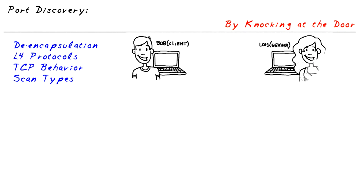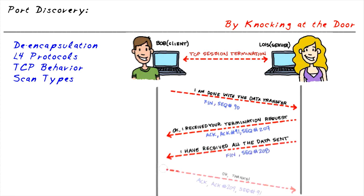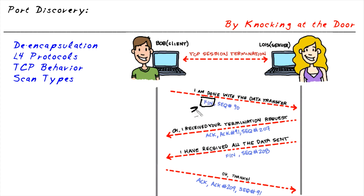Very similar to saying goodbye at a party appropriately, TCP also completes its conversations in a certain manner. The typical TCP termination works like this: Bob would send a TCP segment with the FIN flag set in the TCP header, along with a sequence number.